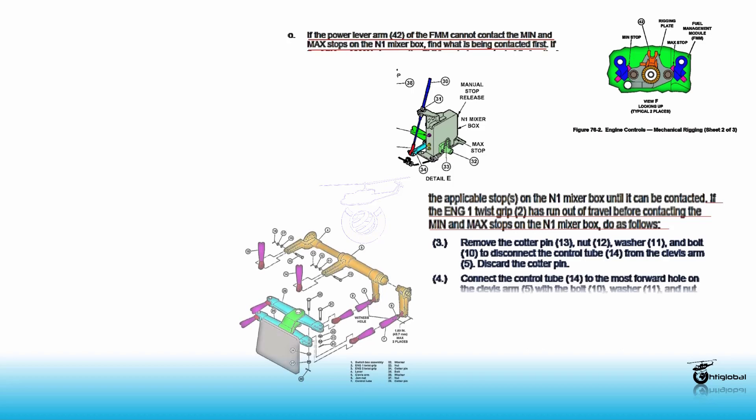Connect the control tube 14 to the most forward hole on the clevis arm 5 with the bolt 10, washer 11, and nut 12. Tighten the nut and safety with a new cotter pin 13.